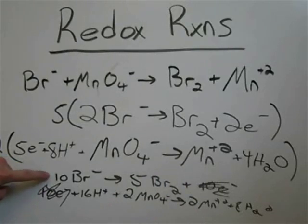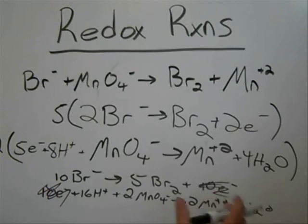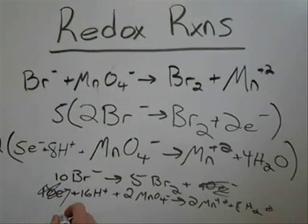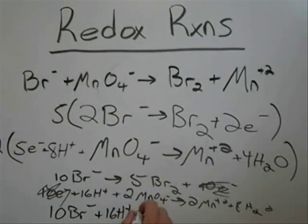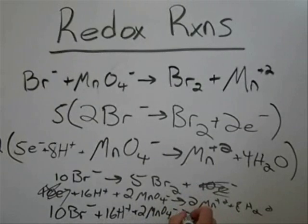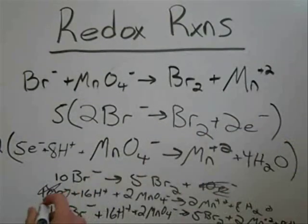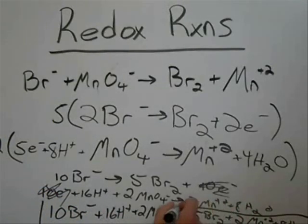And if there were waters in this top reaction, they would cancel out with this. But since there's not, we're just going to leave all the water in there. So now we just go ahead and rewrite everything as 10 Br minus plus 16 H plus plus 2 MnO4 minus yields 5 Br2 plus 2 Mn plus two plus 8 H2O. And this is our final answer.